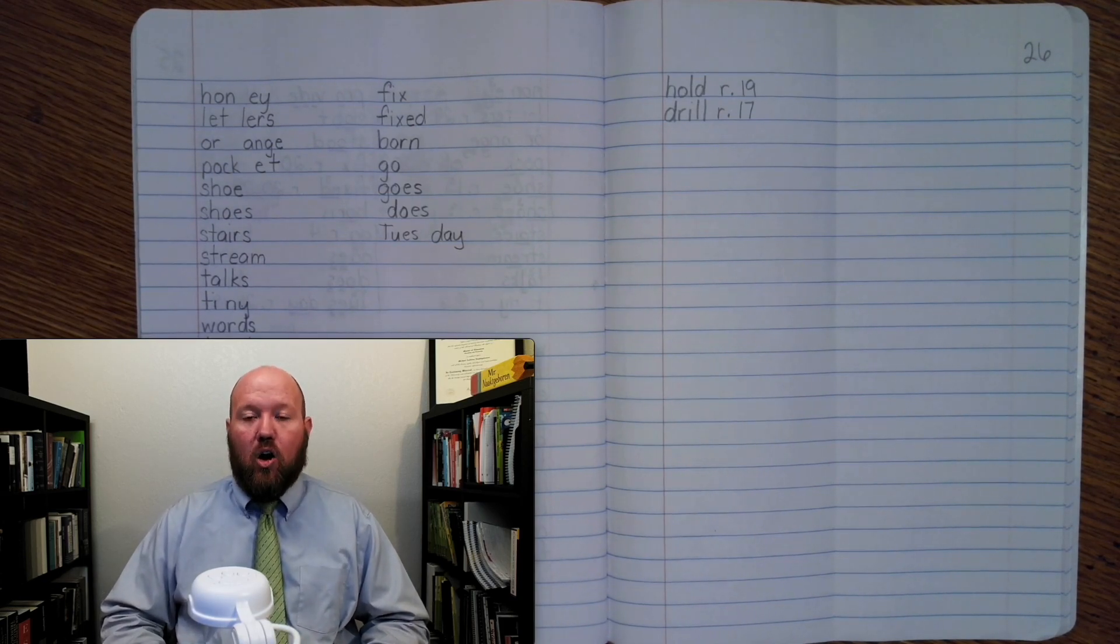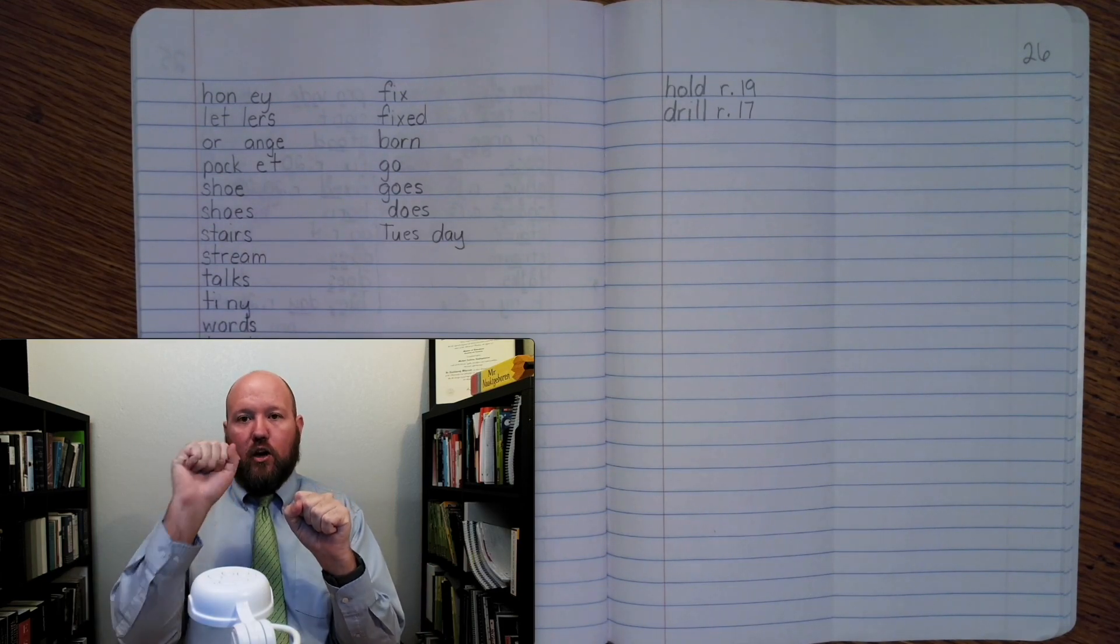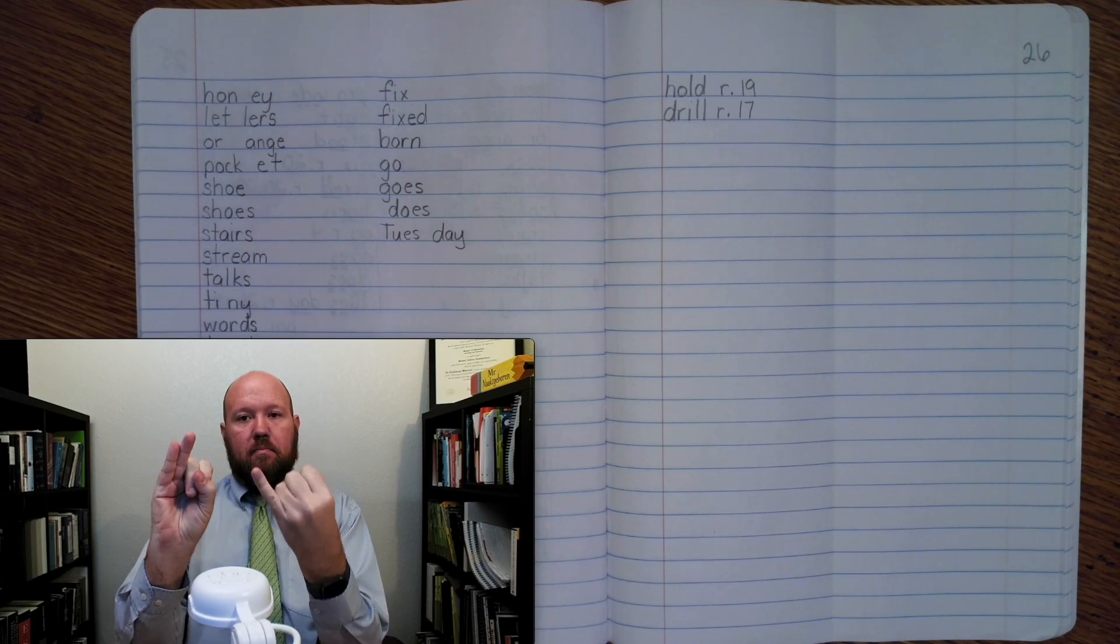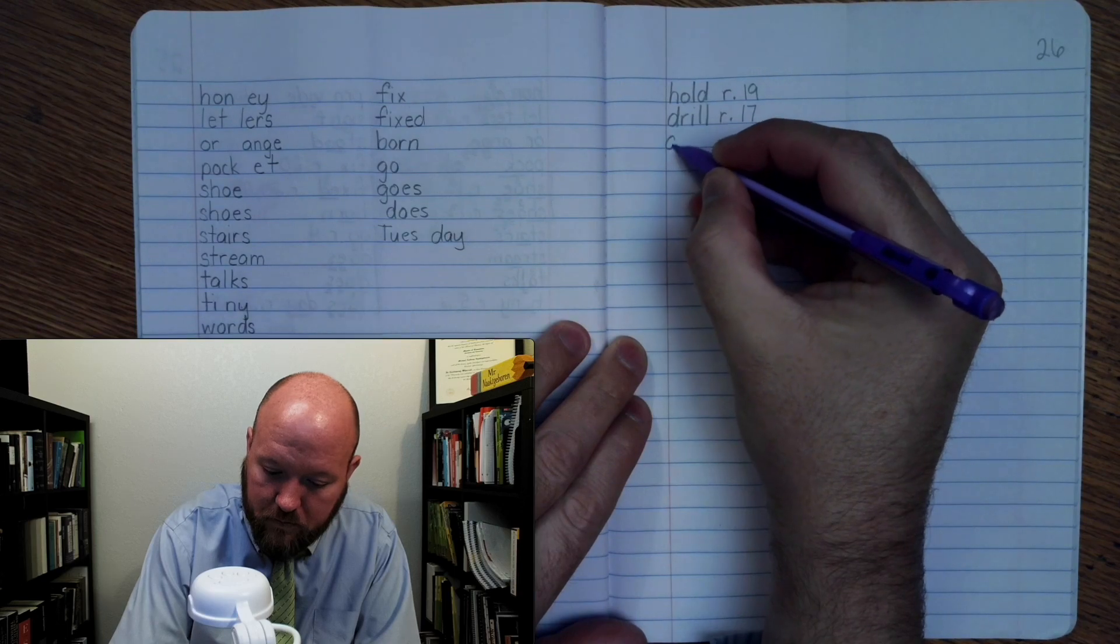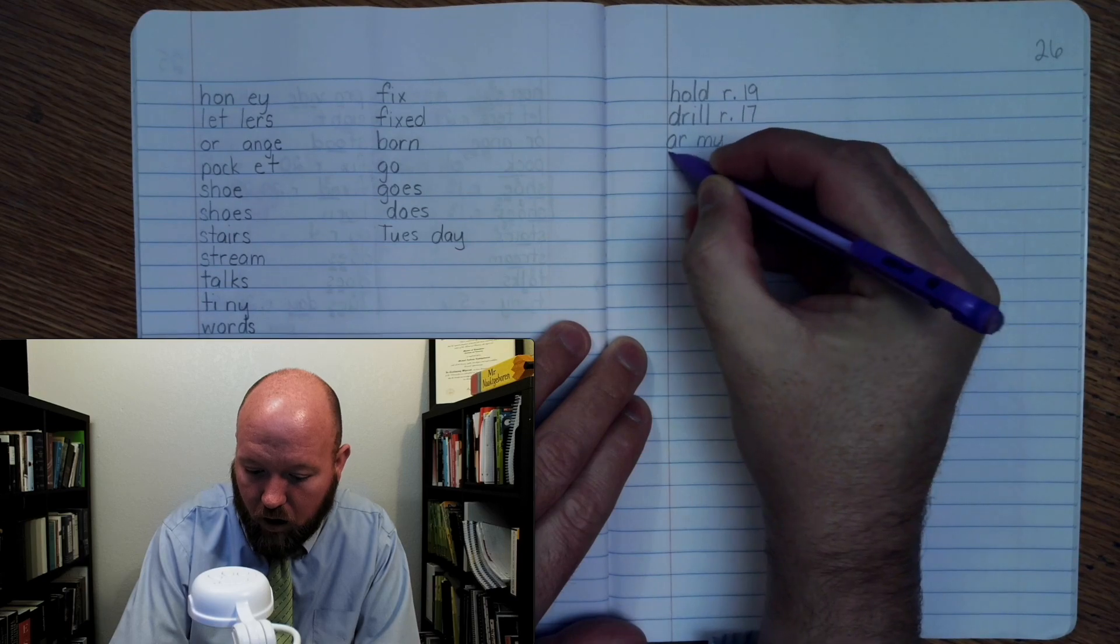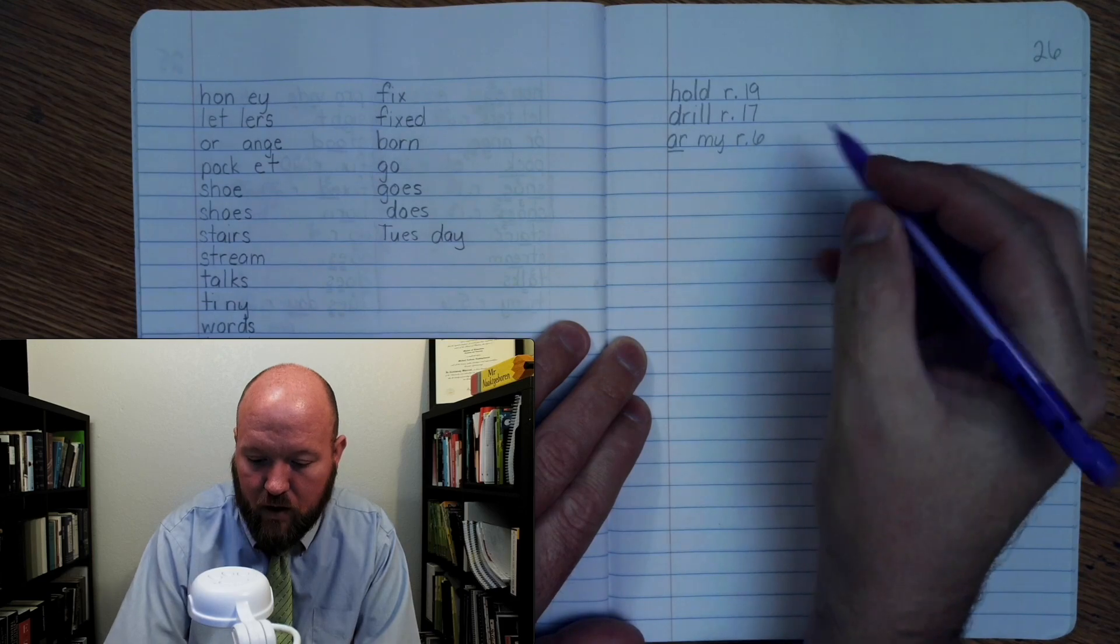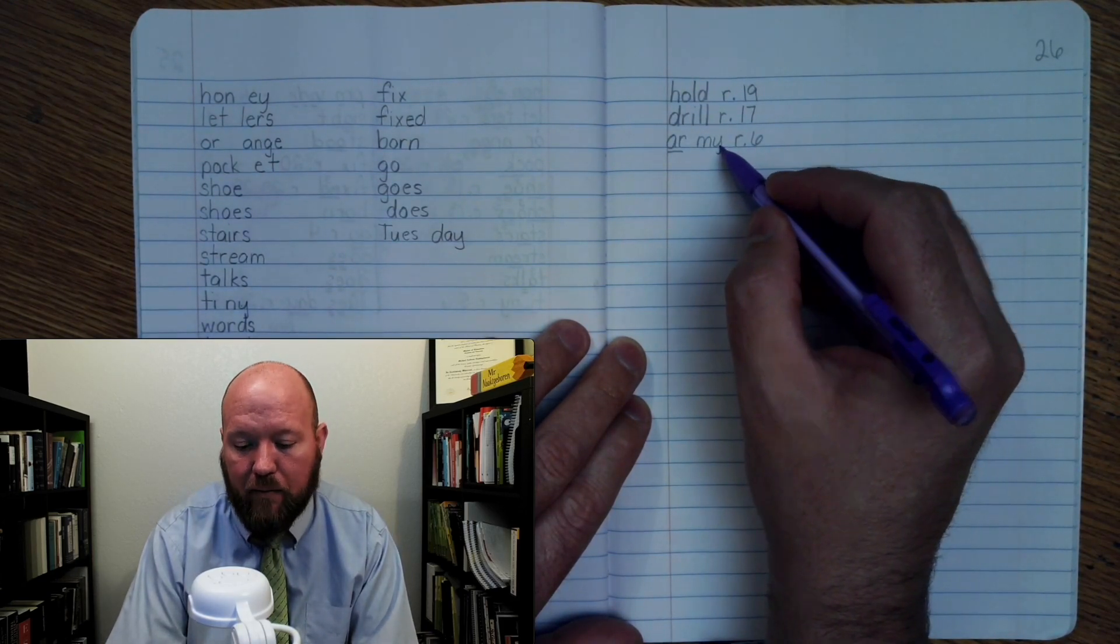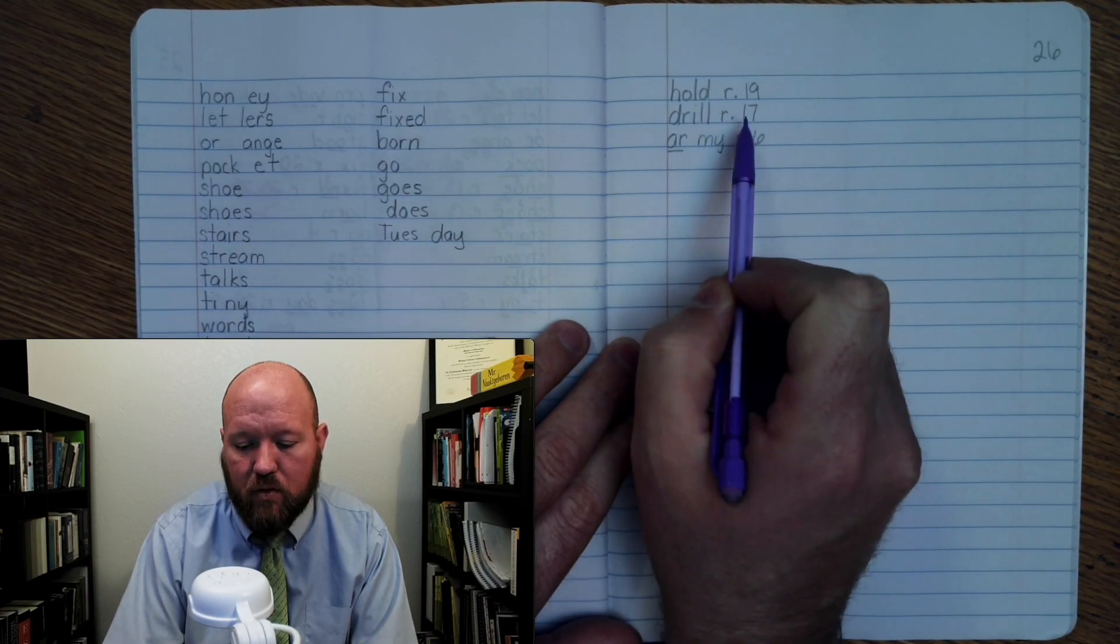The next word is army, like 'the army is marching out to war.' Base word army: A-R-M-Y. Write it: A-R-M-Y. For markings: A-R once, M-Y. This uses Rule 6: English words can't end in I, so we use a Y. Rule 17 states that L's will often double at the end of words.